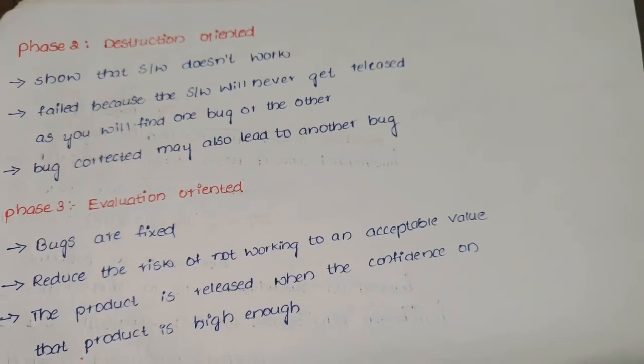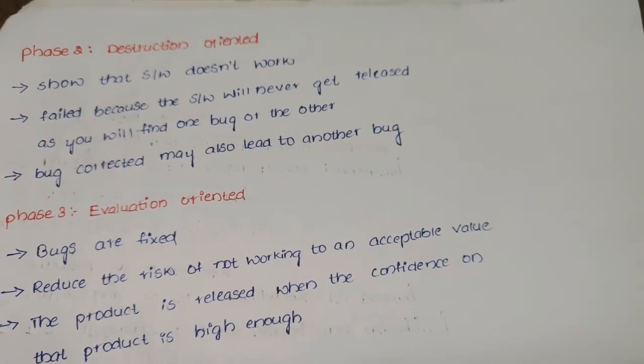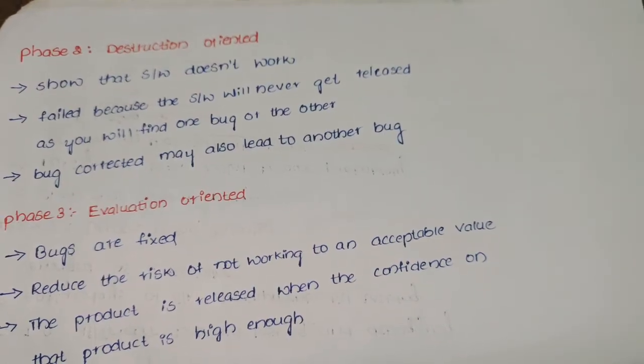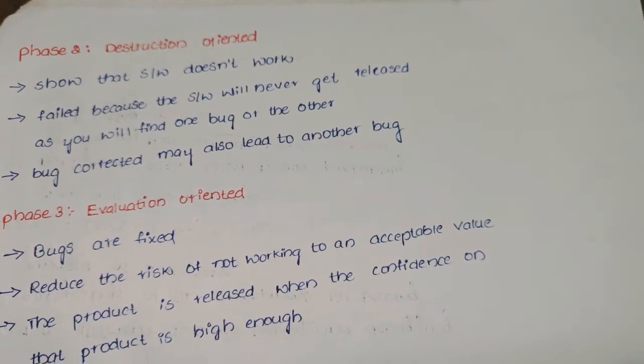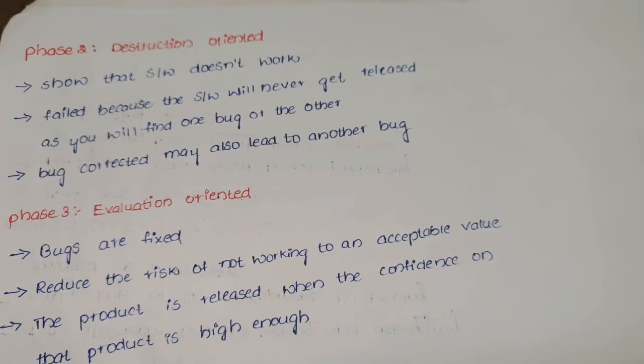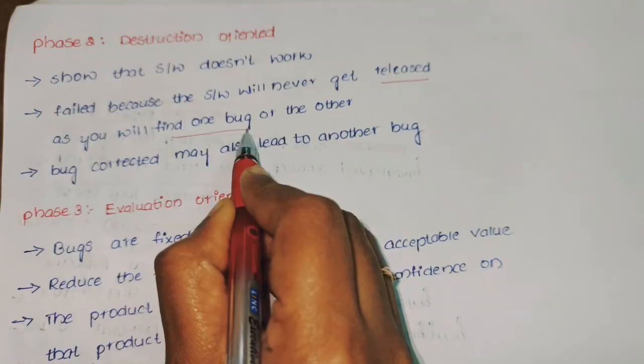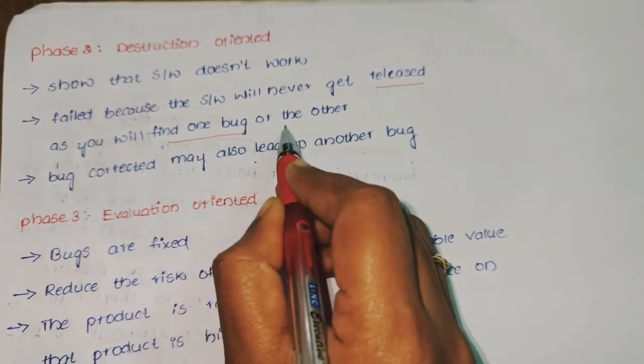In destruction oriented, if we correct one error, we may also lead to another bug. It failed because software will never get realized as you will find one bug or the other. One bug corrected may also lead to another bug.